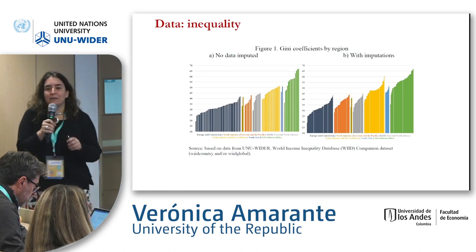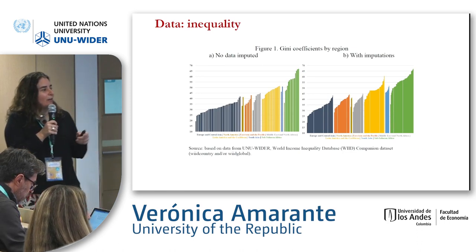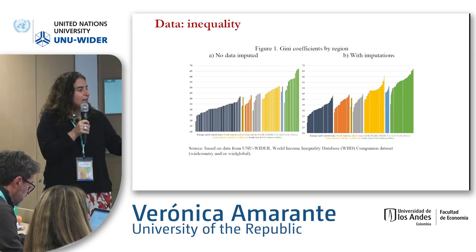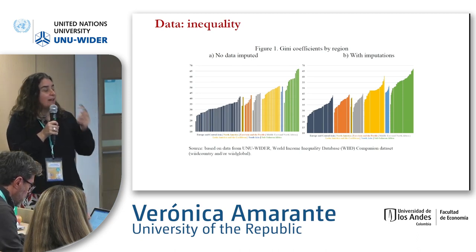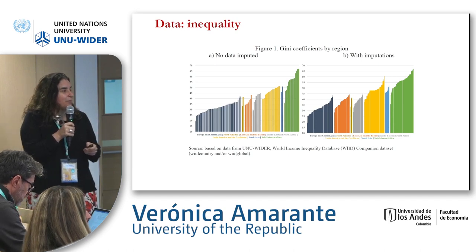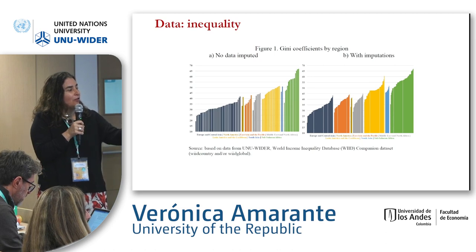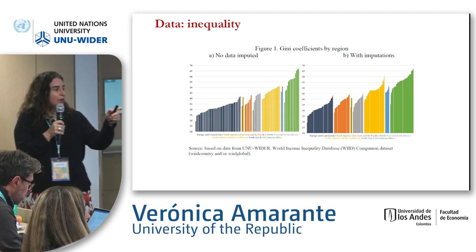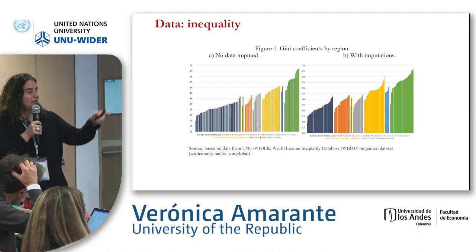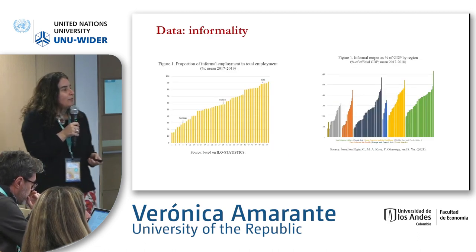Presenting some basic results: looking at the Gini index from this database, we can see higher inequality levels for sub-Saharan Africa (green) and also for Latin American countries (yellow). About informality, we have two measures, but the ILO measure is very incomplete so we cannot get results from that. The other measure — informal output as a percentage of GDP — again shows higher levels of informality for Latin American and sub-Saharan countries.